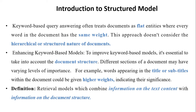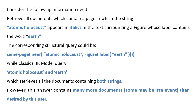Definition of Structured Model: a retrieval model which combines information on the text content with information on the document structure. For example, consider the following information need: retrieve all documents which contain a page in which the string 'atomic holocaust' appears in italics in the text surrounding a figure whose label contains the word 'earth'. The corresponding structural query would specify that on the same page, 'atomic holocaust' should appear near a figure whose label is 'earth'.